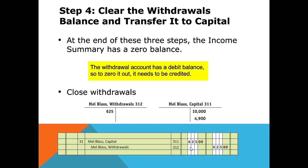What we're really doing here mirrors the statement of owner's equity: we take the beginning balance of $10,000, add net income, and subtract withdrawals. That's why we debit capital $625. The ending balance of capital equals the ending capital amount from the statement of owner's equity for the month.